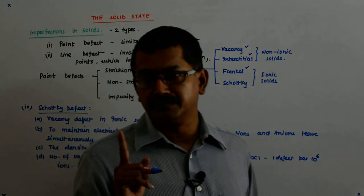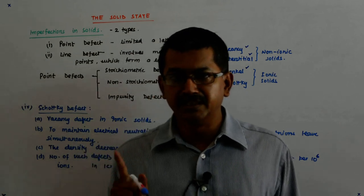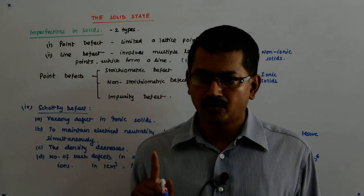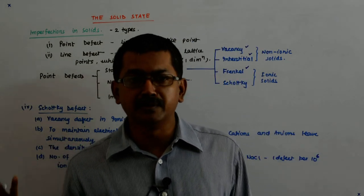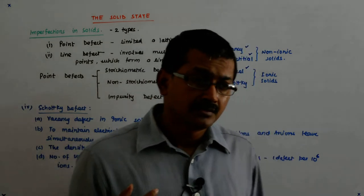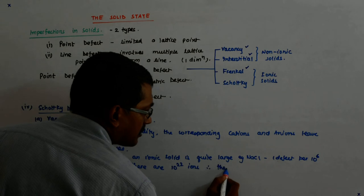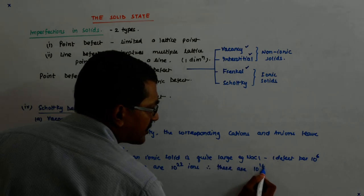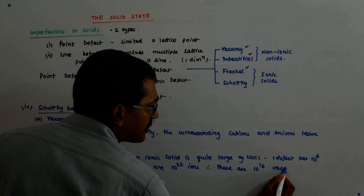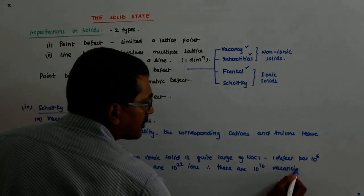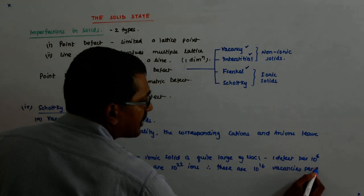Though it is one in a million. Still, there are 10 to the power 16 vacancies per centimeter cube.